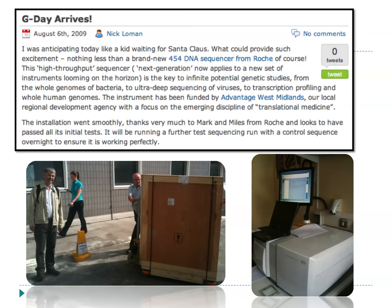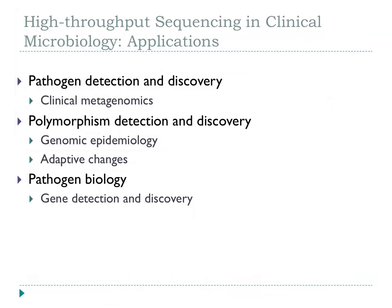Here in Birmingham, we've been doing this for a couple of years. This blog posting from one of my bioinformaticians captures the excitement — he was anticipating a brand new 454 DNA sequencer like a kid waiting for Santa Claus. With these approaches, you can detect pathogens, detect differences between pathogens, and find out more about what makes pathogens tick — the pathogen biology.